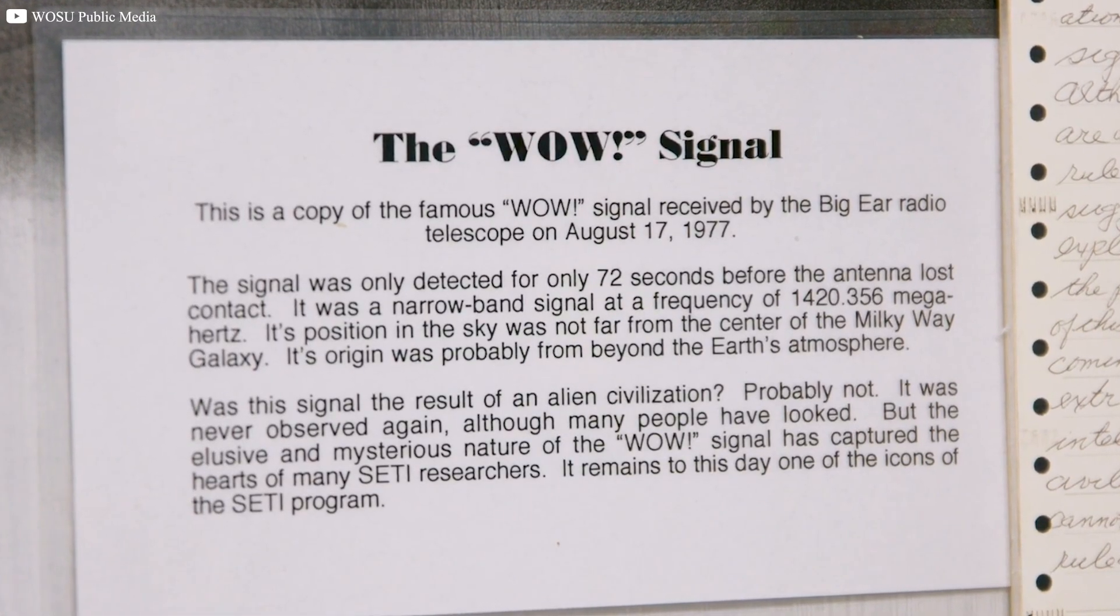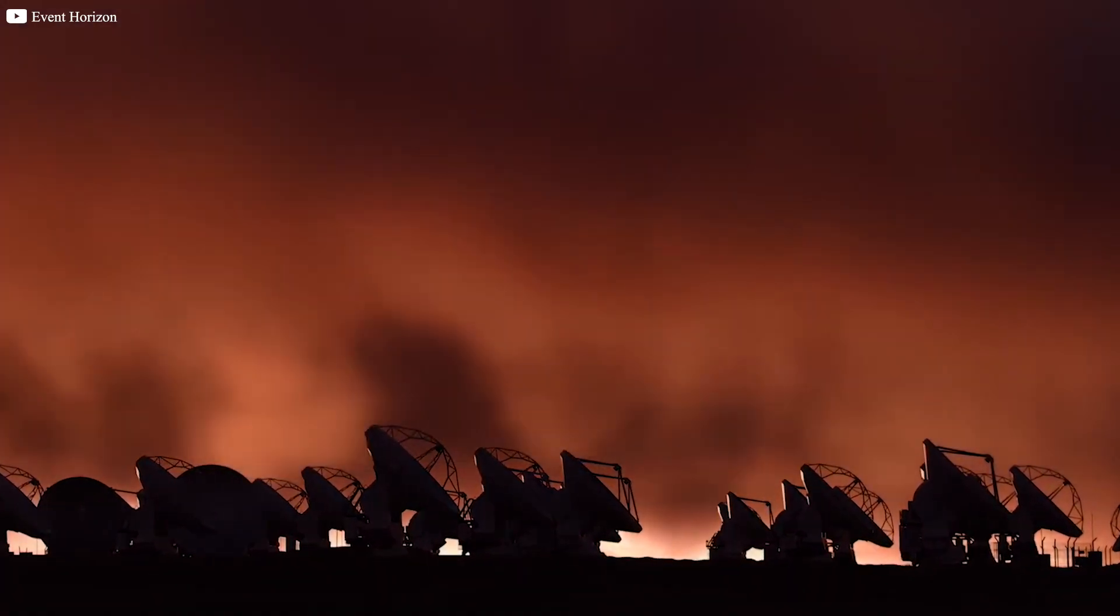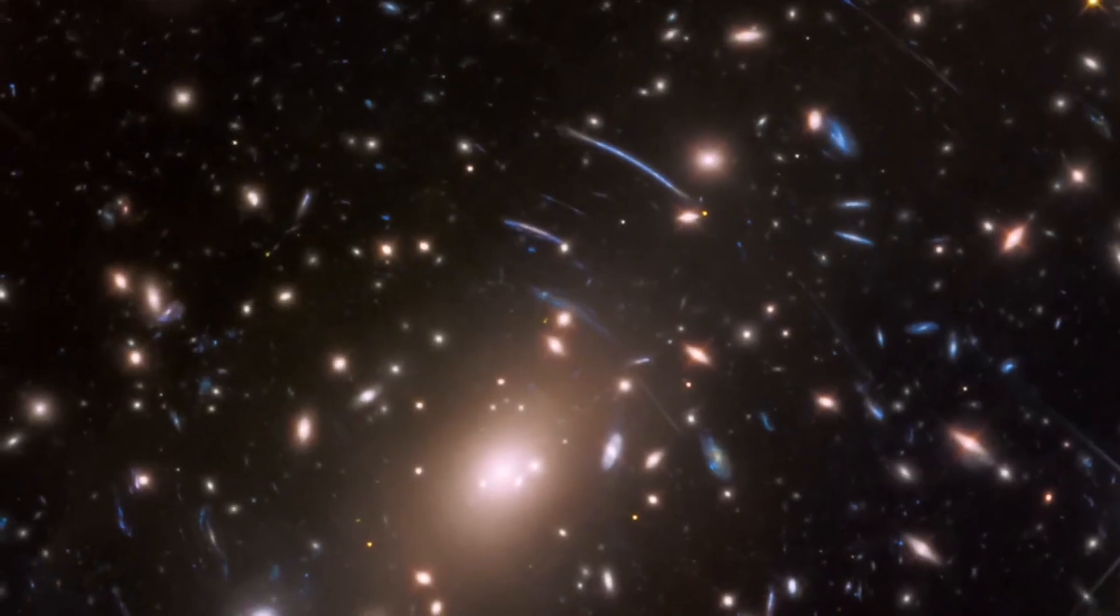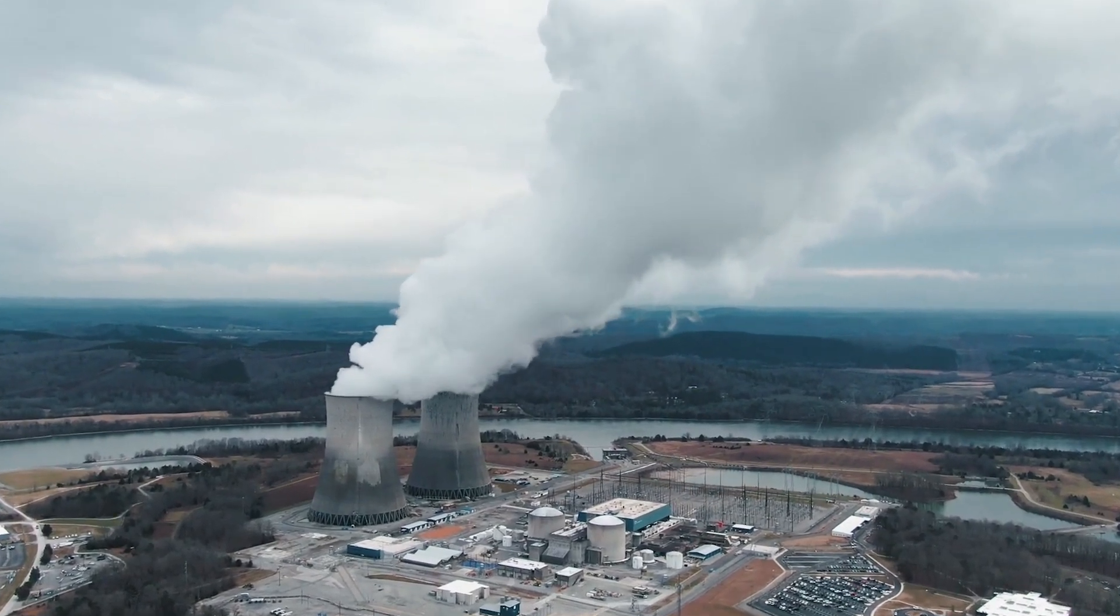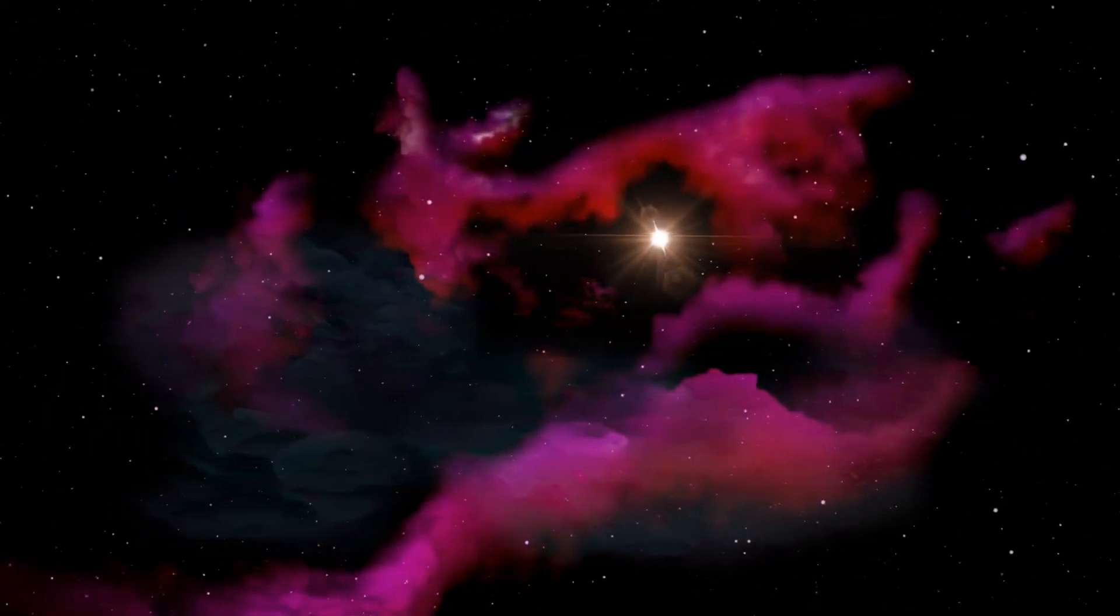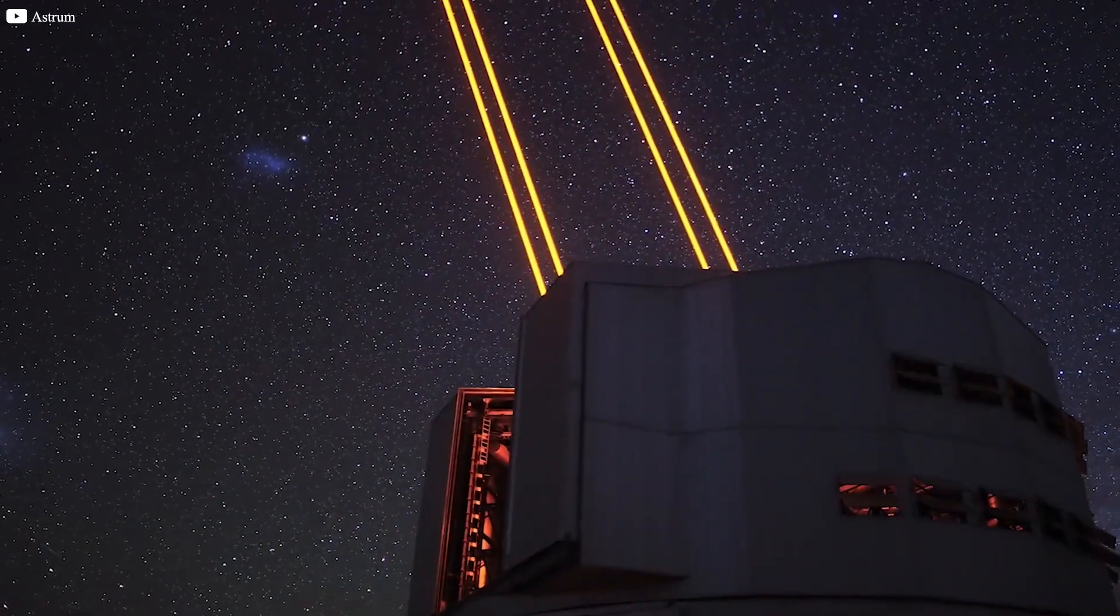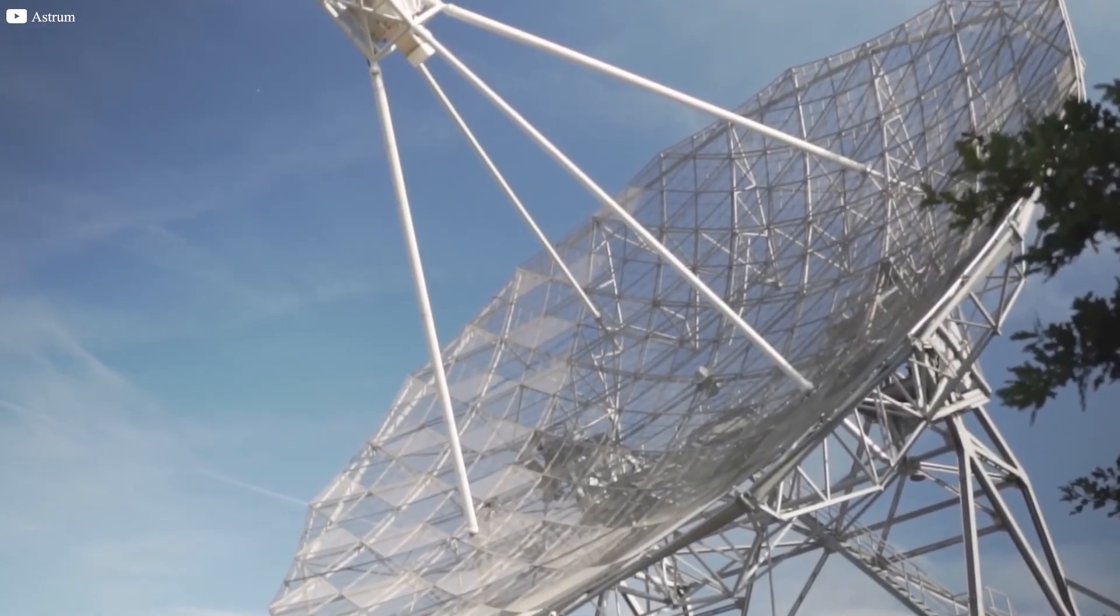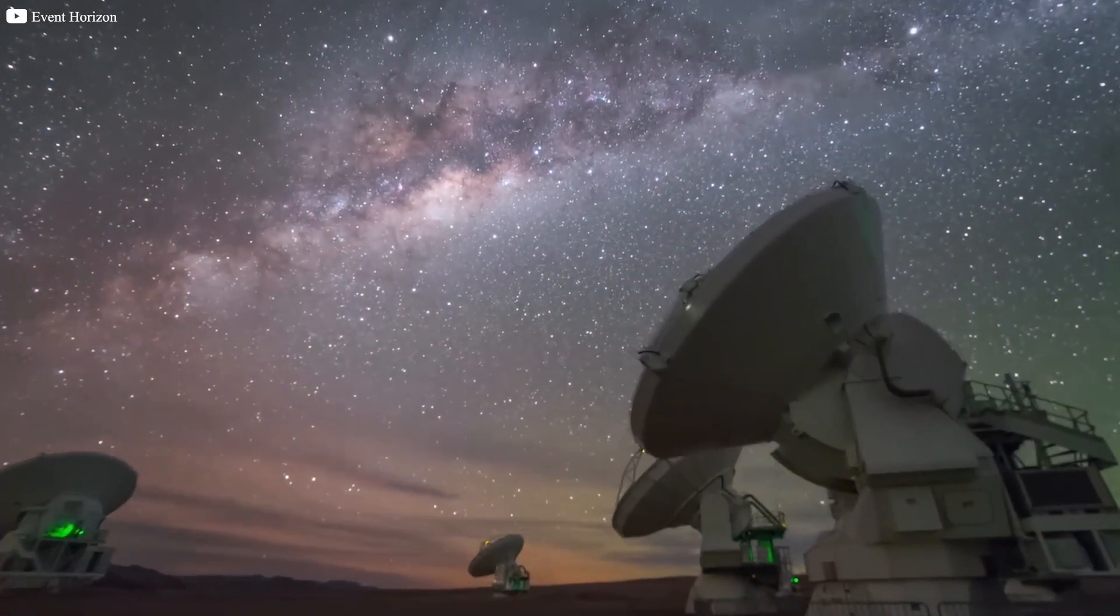What made the signal so remarkable? First, there was the frequency. 1420 MHz is considered a universal calling card in the Search for Extraterrestrial Intelligence, SETI. If intelligent beings were trying to communicate with us, they'd likely choose this frequency. The signal's narrow bandwidth and precise frequency were also key indicators that it wasn't just random cosmic noise. Unlike the usual static from stars or gas clouds, this signal was sharply focused, lasting exactly 72 seconds, the precise amount of time the telescope's beam took to sweep across the sky. It suggested that the source might be fixed, possibly even artificial.